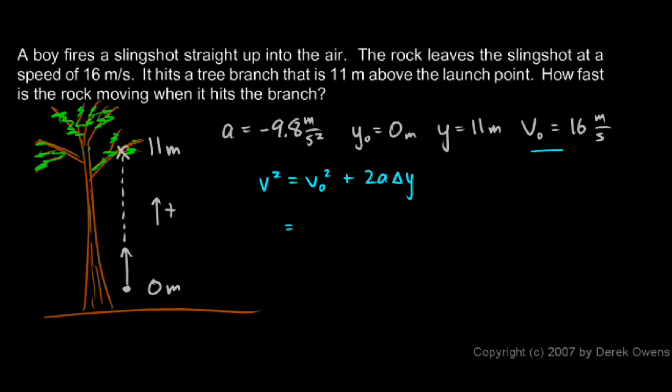The initial speed is 16 meters per second. So I put in 16 meters per second. And that's squared plus 2 times a. And a is negative 9.8 meters per second squared. And you see that negative sign matters. We'll get an entirely different answer if we forget to put that there.